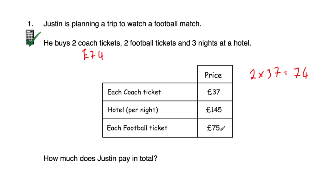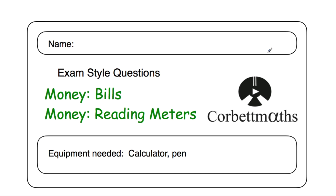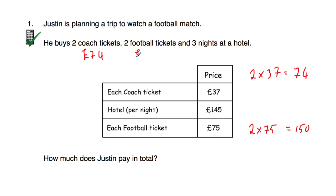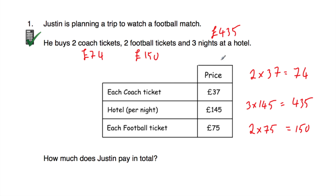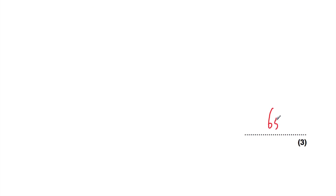He buys two football tickets at £75 each, so two multiplied by 75 is equal to £150. Then for the hotel, he books three nights at £145 per night. Three multiplied by £145 is equal to £435. Now the question asks how much Justin pays in total, so we do £74 plus £150 plus £435, and that's equal to £659.